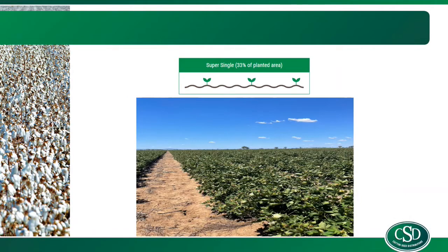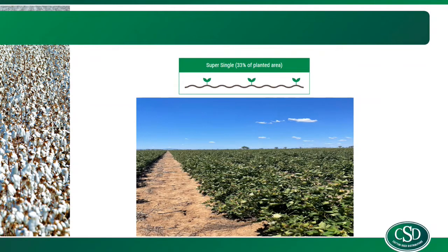Moving into super single — there has been a little bit of super single around in the past couple of seasons. For those who don't know, super single skip is 33% of the planting area, or 2.4 metres. This has probably the highest risk in less than favourable conditions and is suited to the western parts of our growing areas. However, people do grow throughout those cooler areas — around Balada heading further east to Mullaley and Breeza — with some pretty successful results. In seasons like we've seen in the past couple of years, we can see some pretty vigorous growth. It does take a little bit more management in those really favourable years.